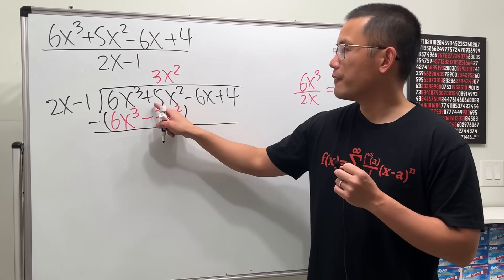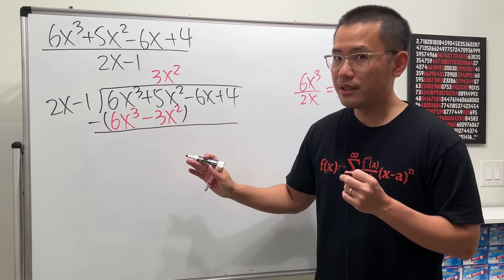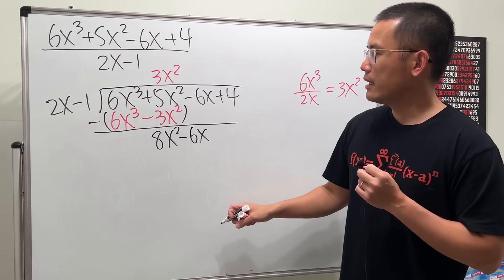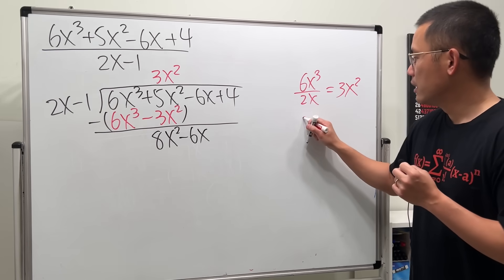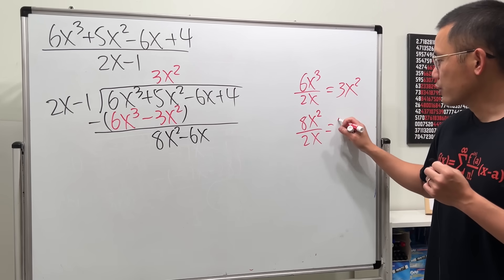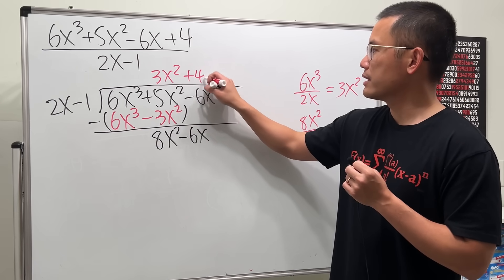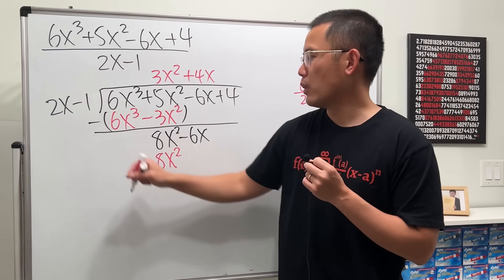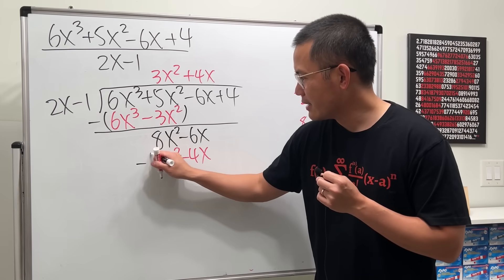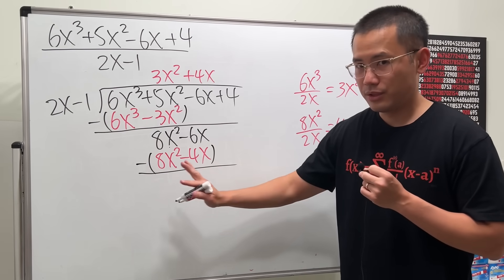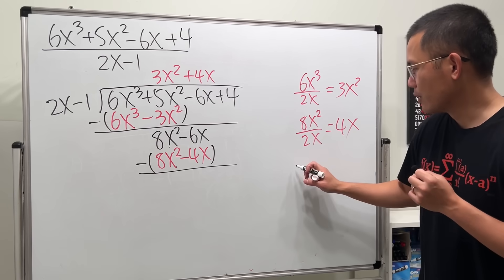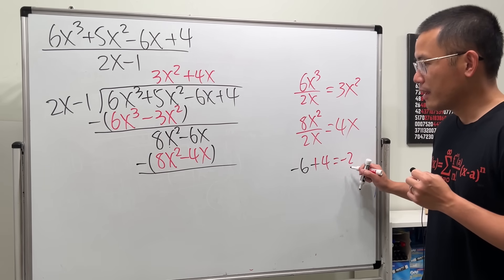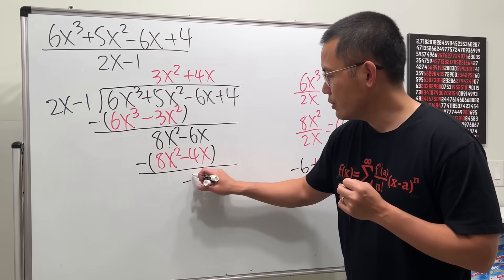6x³ minus 6x³ is 0. Then 5 minus negative 3 is 5 + 3 = 8, keeping the x² term. Bring down negative 6x. Compare: 8x² divided by 2x is 4x, so we need positive 4x. Then 4x times 2x is 8x², and 4x times negative 1 is negative 4x. Subtract: 8x² cancels. Then negative 6 minus negative 4 is negative 6 + 4 = negative 2, keeping the x term.